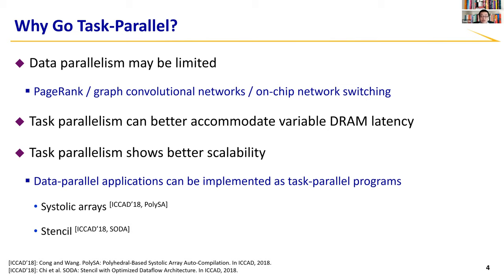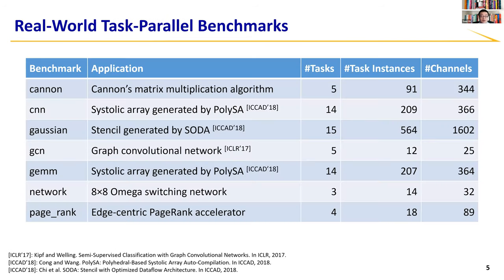Another reason for task parallelism is that it has shown better scalability due to local communication patterns. This has been demonstrated in two previous works published at ICCAD 2018. To further convince you that there is real-world demand for task parallel HLS programs, this slide shows the list of benchmarks used in this work. Note that since each task can be instantiated many times, the number of tasks and the number of task instances are different.